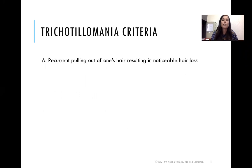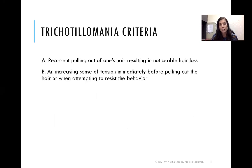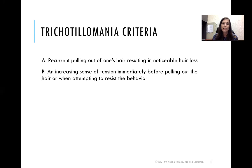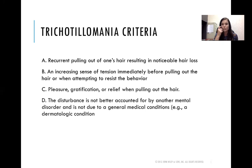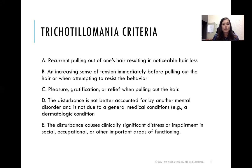The criteria for trichotillomania: recurrent pulling out of one's hair resulting in noticeable hair loss; an increasing sense of tension immediately before pulling out the hair or when attempting to resist the behavior — similar to the obsession-compulsion pattern where the person engages in compulsive behavior to calm an obsessive urge; pleasure, gratification, or relief when pulling out the hair; the disturbance is not better accounted for by another mental disorder and is not due to a general medical condition; and the disturbance causes clinically significant distress or impairment in social, occupational, or other important areas of functioning.